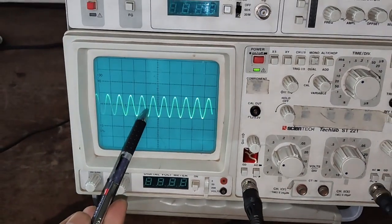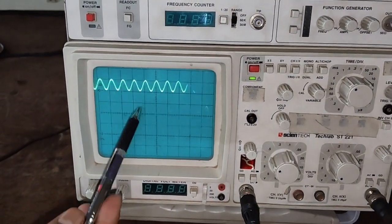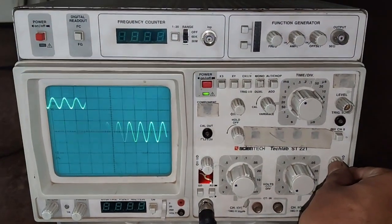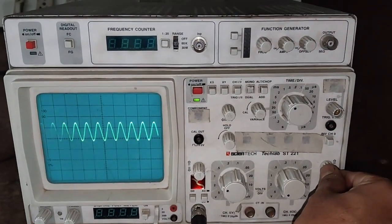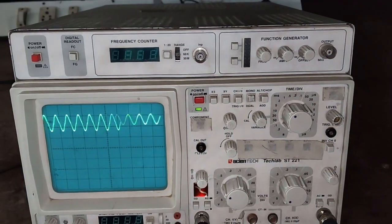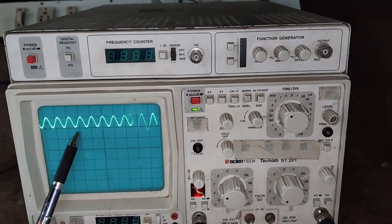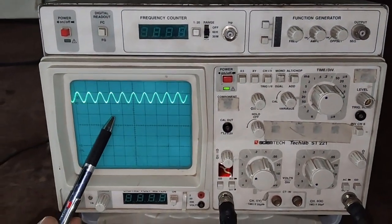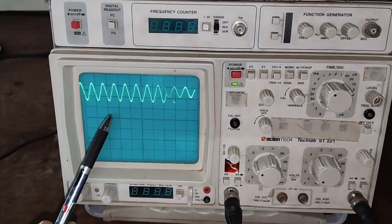In order to observe the 180 degree phase shift, we have to superimpose this signal or bring one signal over another. Here we can see that the smaller one is the input, the bigger one is the output. Here both input as well as output is 180 degree out of phase.